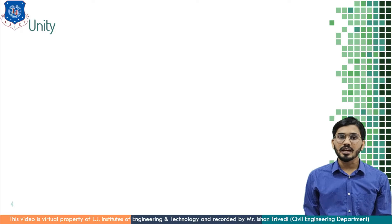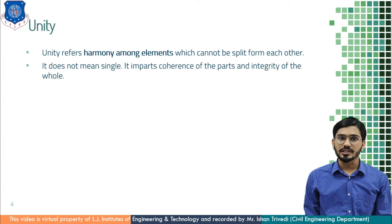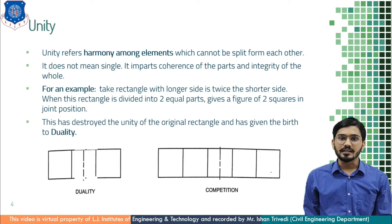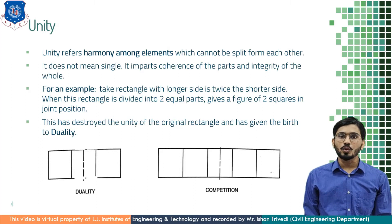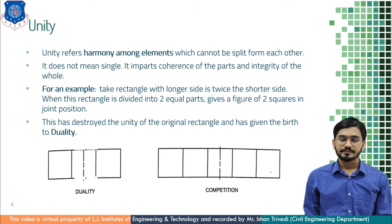So let us start with unity. Unity refers to the harmony among elements which cannot be split from each other. Unity does not mean a single thing — it imparts the coherence of parts and integrity of the whole. For example, if I take a rectangle where the length is twice the width, and I cut it centrally, it gives two independent equal squares. This destroys the unity of the original rectangle and gives birth to duality.